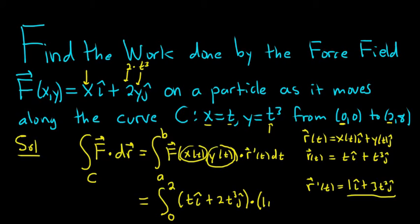So 2t cubed j hat dot and then r prime is right here. So it'll be, I'm going to write it as 1 i hat. It's just i hat, but I like to write it as 1 i hat. You'll see why in a minute. Plus 3t squared j hat dt.